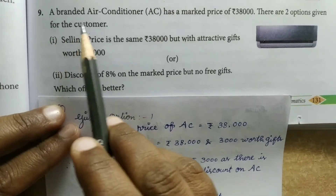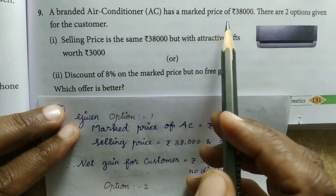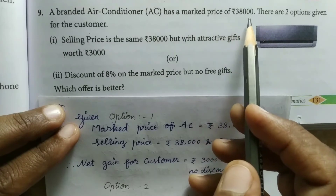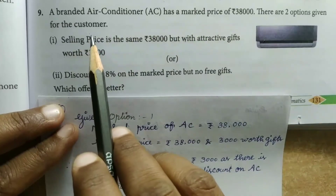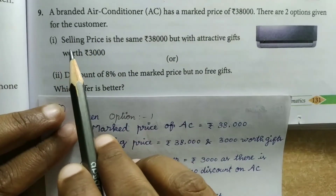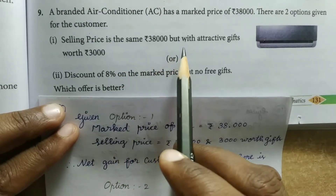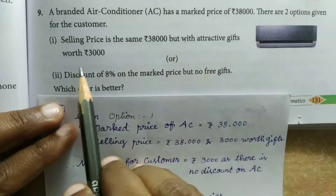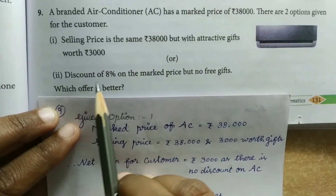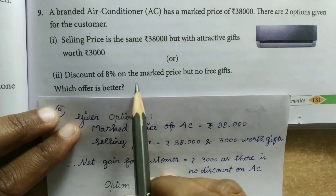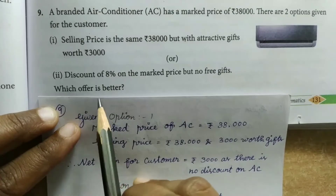A branded air conditioner has a marked price of Rs. 38,000. There are two options given for the customer. First option: selling price is the same, Rs. 38,000, but with attractive gifts worth Rs. 3,000. Second option: discount of 8% on the marked price but no free gifts. Which offer is better?